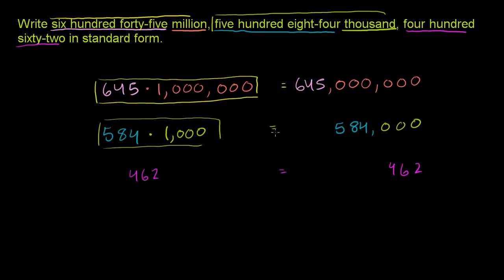Now, our number is all of these combined. It is 645,584,462. So one way to think about it is that you could add these three numbers.